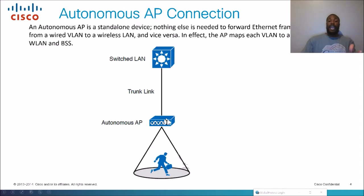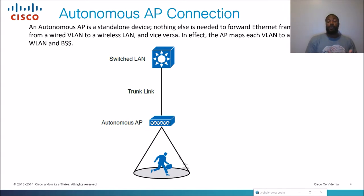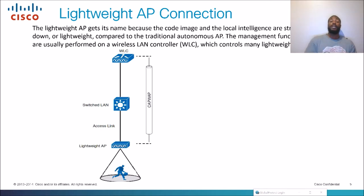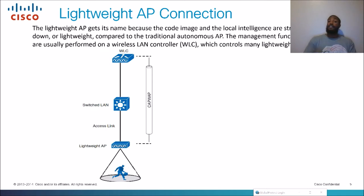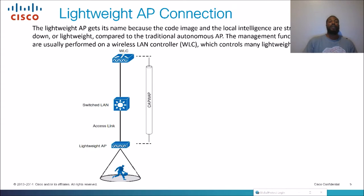Autonomous APs carry all VLANs themselves through the trunk, and you do all management on the physical AP itself. This is fine if you've got one or two APs in a small restaurant, small business, or SOHO office. But when you have them in lightweight mode with large scale — for example, at my job we have one region with 2,000 APs, and we have several regions throughout the United States — they're all controlled on a wireless controller. That's the key difference between lightweight mode and autonomous mode.